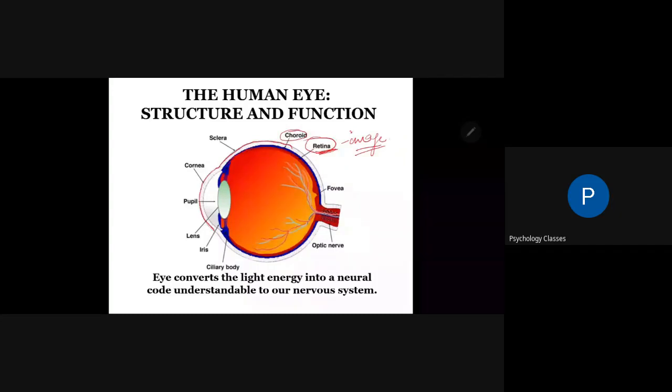Now, inside this cornea, we have our pupil here which constricts and dilates depending upon the light that is coming into our eyes.